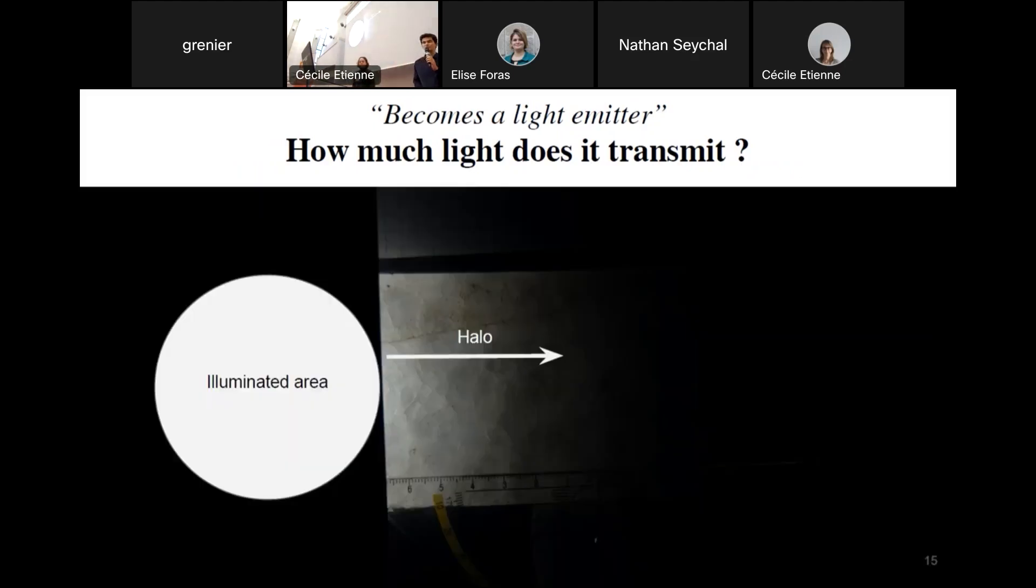But we noticed that light travels a lot sideways inside the sample. As you can see on this picture, the halo of diffusion is huge. So this is a quite unique property, and this is what makes the sample bright and diffusing at the same time. But for us, it was a bit of a problem.